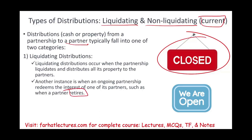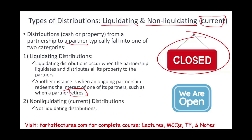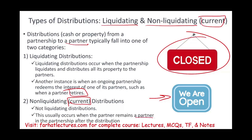Basically, in a liquidating distribution, you are ceasing to be a partner, or the business ceases to exist as a partnership. A non-liquidating distribution, also called current, simply means the partnership is still in business and open, and the partner remains a partner after the distribution — this is the common one. You get a distribution from the partnership, you stay as a partner, and the partnership continues as a viable business. Life goes on.